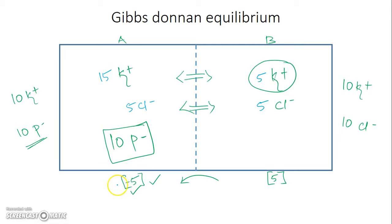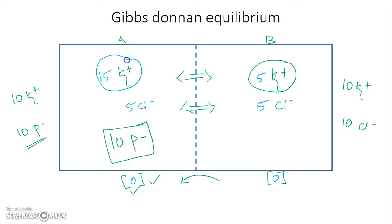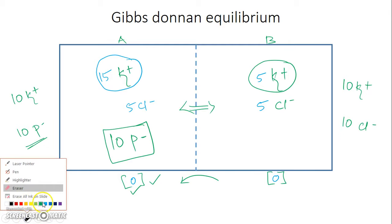At this point, the electrical equilibrium is restored — both sides have net charge zero: side A has 15 positive and 15 negative, side B has 5 positive and 5 negative. However, potassium is now at high concentration on side A, so a chemical gradient develops driving potassium from side A back towards side B.